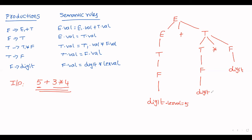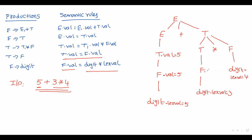Now, digit.lexval is equal to 5 at the first leaf, 3 at the second, and 4 at the third. F.value = digit.lexval, so F.value = 5. T.value gets its value from F — that is a synthesized attribute — so T.value = 5. Similarly, F.value = 3, T.value = 3, and F.value = 4.